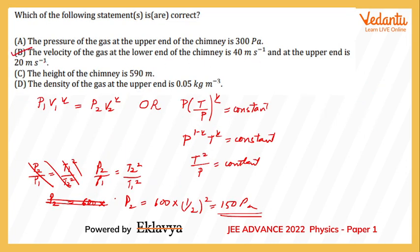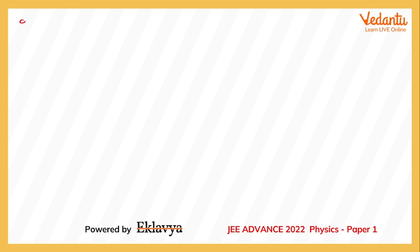Checking the options: v1 = 40 m/s and v2 = 20 m/s — this option looks correct. The pressure at the upper end option is wrong. The density at the upper end option is also wrong. We are left with option C to check, which is the trickiest. Many teachers claimed C is the answer by applying Bernoulli's theorem — but in the wrong manner.